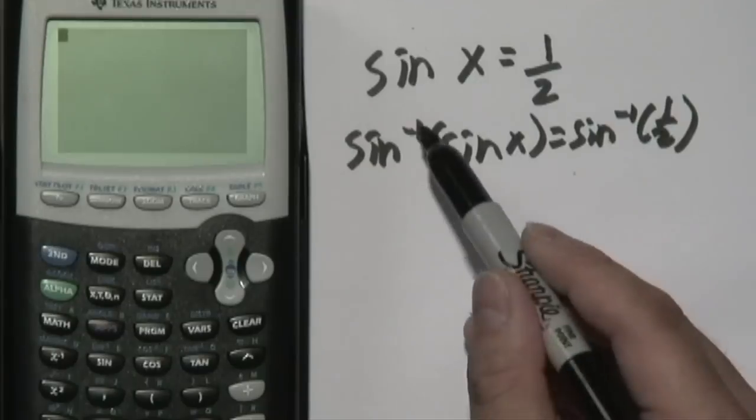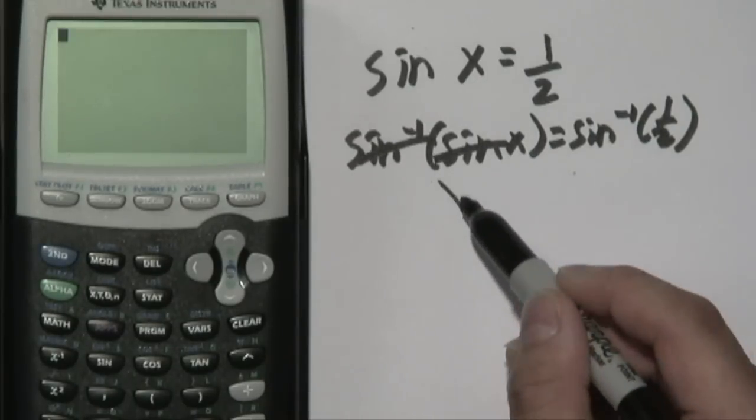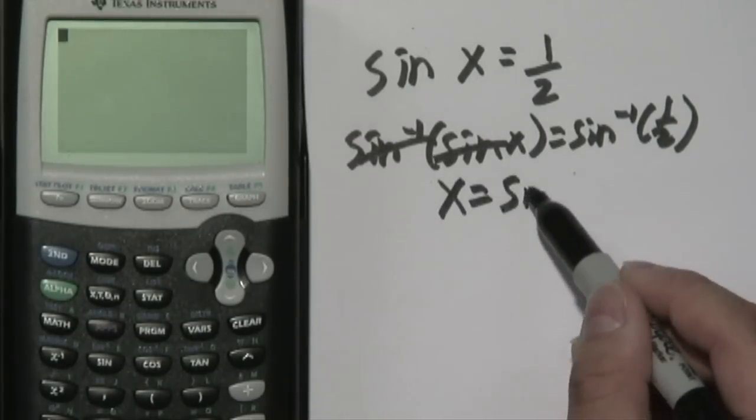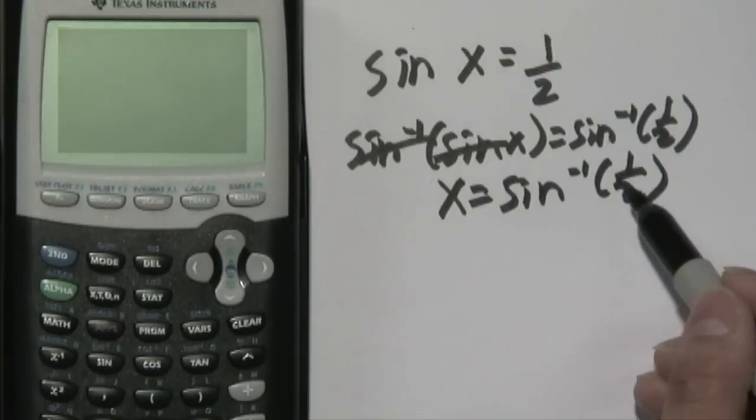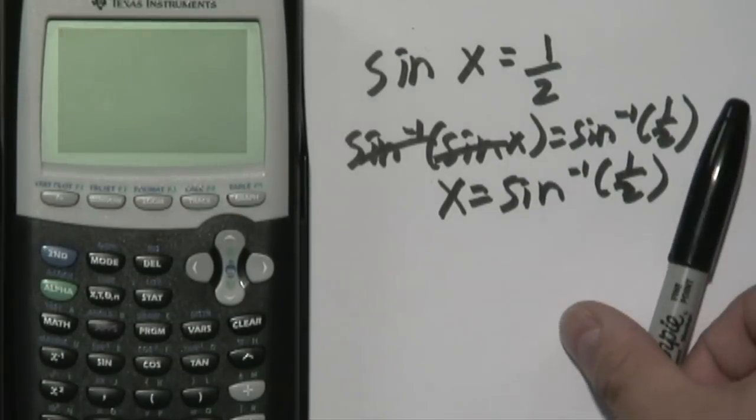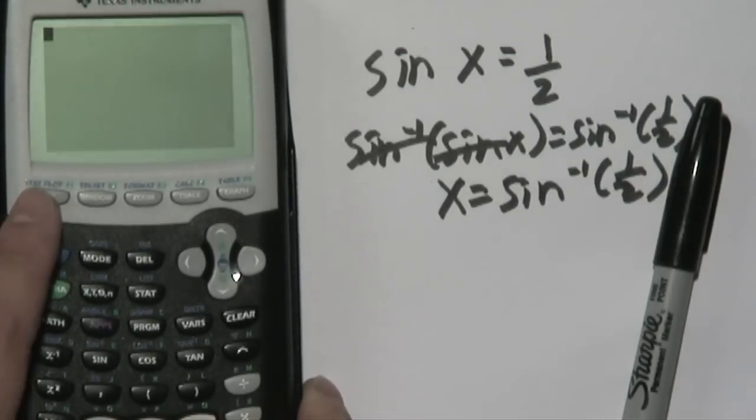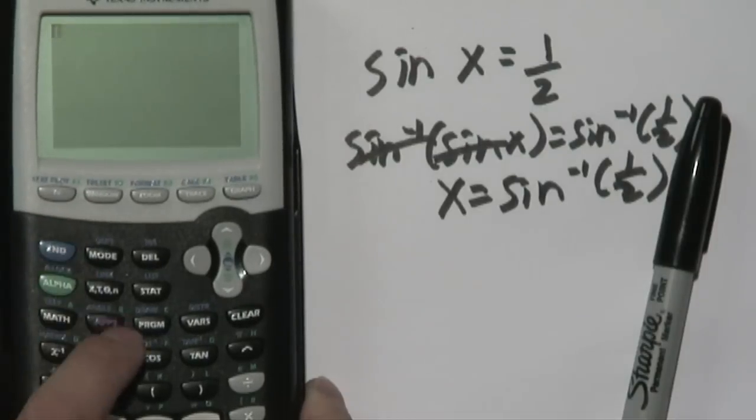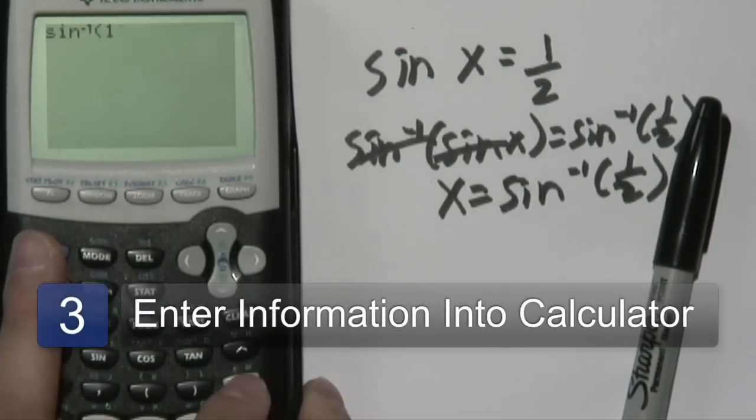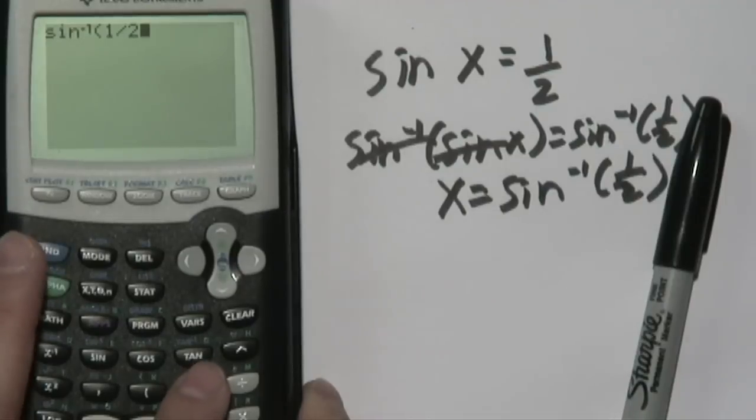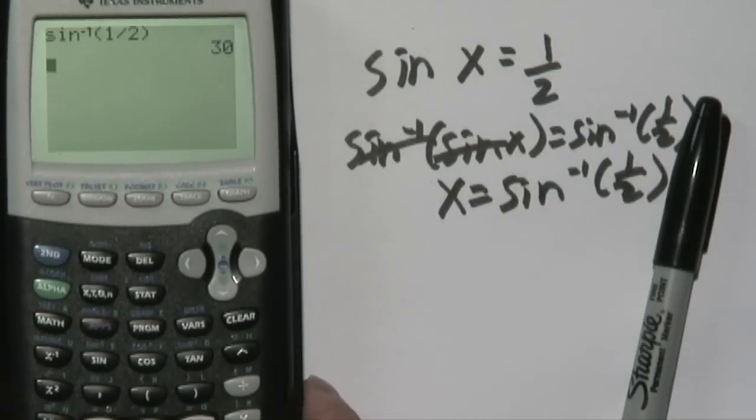Now what happens here is that the sine inverse and the sine will cancel and you're left with x. And so x is going to equal to sine inverse of 1/2. And that's what you want to enter on your calculator. So here we go. Now because you need the blue button, you have to press second first and then the sine inverse key and then do 1 divided by 2. And close parenthesis and you're going to have 30 degrees.